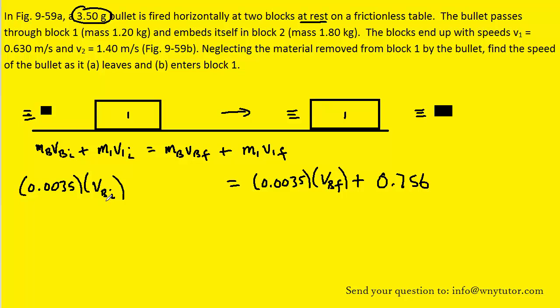We run into a problem, however, because we have two unknowns, the initial velocity of the bullet and the final velocity of the bullet. So in order to proceed, we're going to have to turn to the second collision, so let's bring that back into the picture.